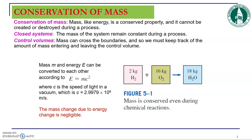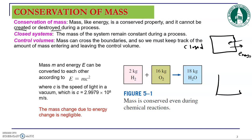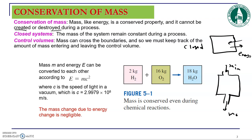We will cover conservation of mass and conservation of energy, and go over different devices such as nozzles, compressors, turbines, and other devices that work based on this control volume energy analysis system. Conservation of mass: mass, like energy, is a conserved property — it's not created or destroyed during a process. A closed system doesn't transfer mass; it only transfers energy through its boundary. An open system can transfer both mass and energy with the environment — it has an inlet and may also have an outlet.